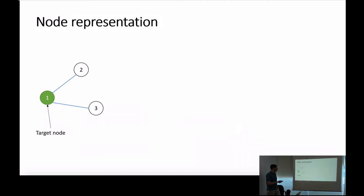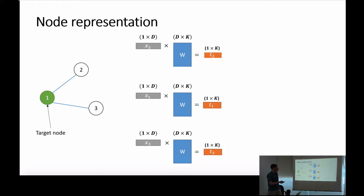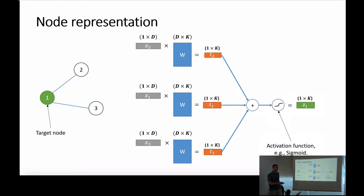To learn a representation for a node, we first project all its neighbors into some other representation. Since node A has two neighbors — nodes 2 and 3 — we project them first. We also include a self-loop so the node's own features contribute to its own representation. Once we have these projected representations, we combine them using a shared weight matrix W across all nodes, then pass them through a non-linearity like leaky ReLU or sigmoid to get the final representation for A. That's the whole idea of graph convolution.